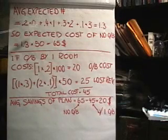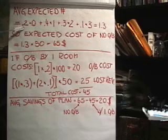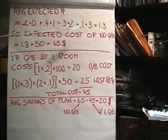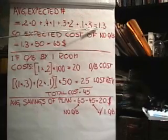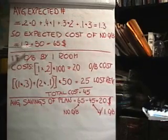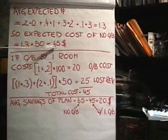Let's calculate the associated cost if we overbook by one. First, we'll calculate the cost of no overbooking for comparison. We have 20% × 0 + 40% × 1 + 30% × 2 + 10% × 3 = 1.3 average expected no-shows. The expected cost of no overbooking is 1.3 × $50 = $65 per night in lost revenue.